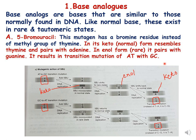5-bromouracil in its keto form, which is its normal form, resembles thymine and pairs with adenine. In the enol form, which is the rare tautomeric form, it pairs with guanine and results in a transition mutation. During replication, when the two strands of DNA separate, adenine — instead of pairing with thymine — pairs with 5-bromouracil, which is incorporated in the keto state.